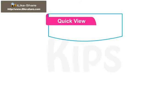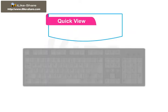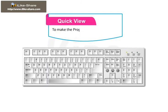Let me quickly tell you that to make the Properties panel visible on the screen, press Ctrl plus F3.